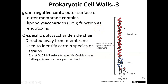Gram-negative bacterial cells are a little more complex since they don't have all those peptidoglycan layers. Gram-negatives have an outer membrane and associated with it they have structures called lipopolysaccharides. A lipopolysaccharide is a lipid with a carbohydrate group attached to it. It has an O antigen, which is the polysaccharide portion, and a lipid known as lipid A.